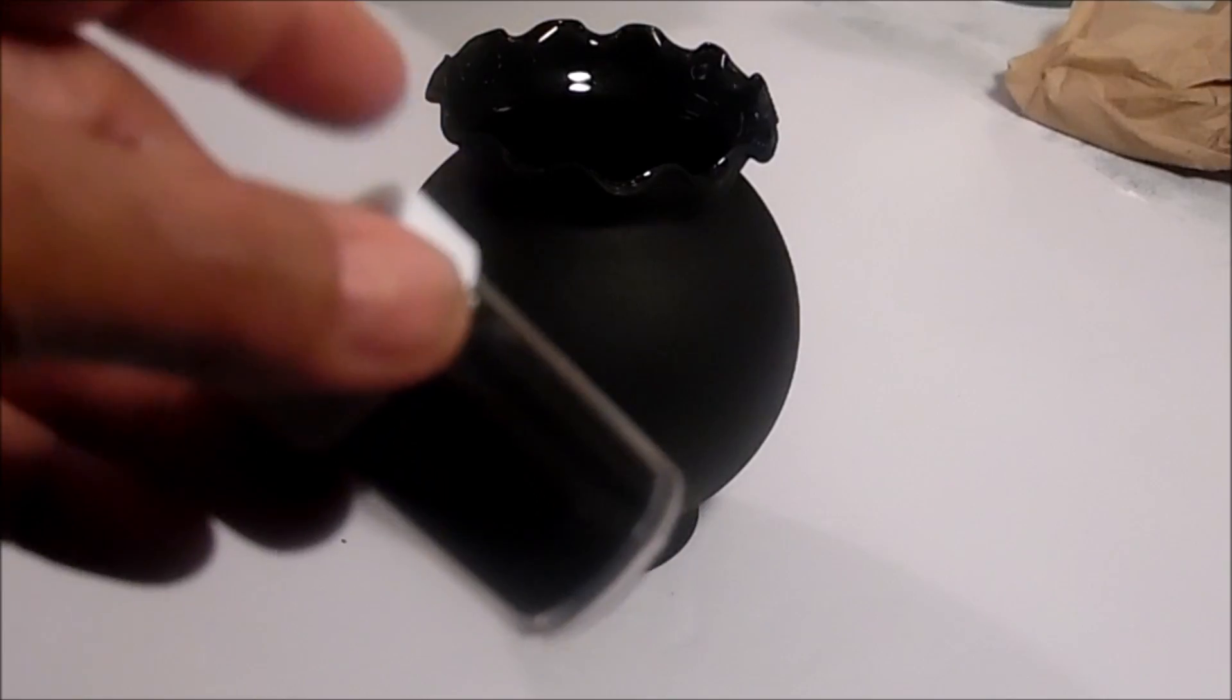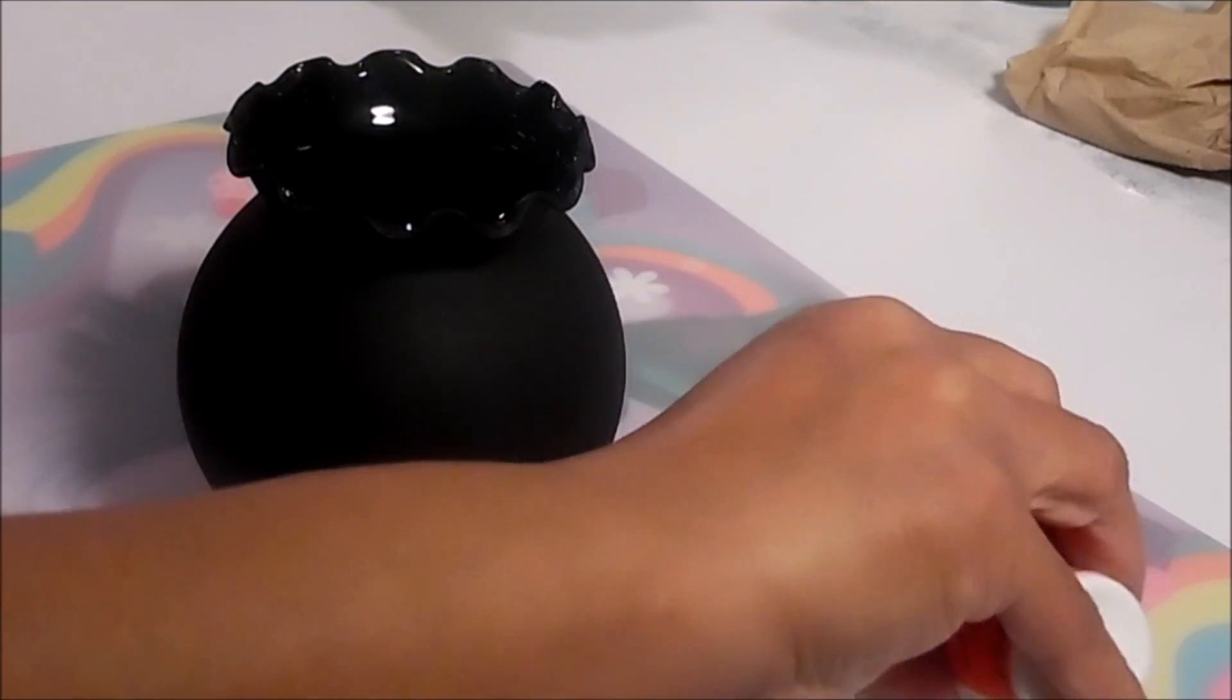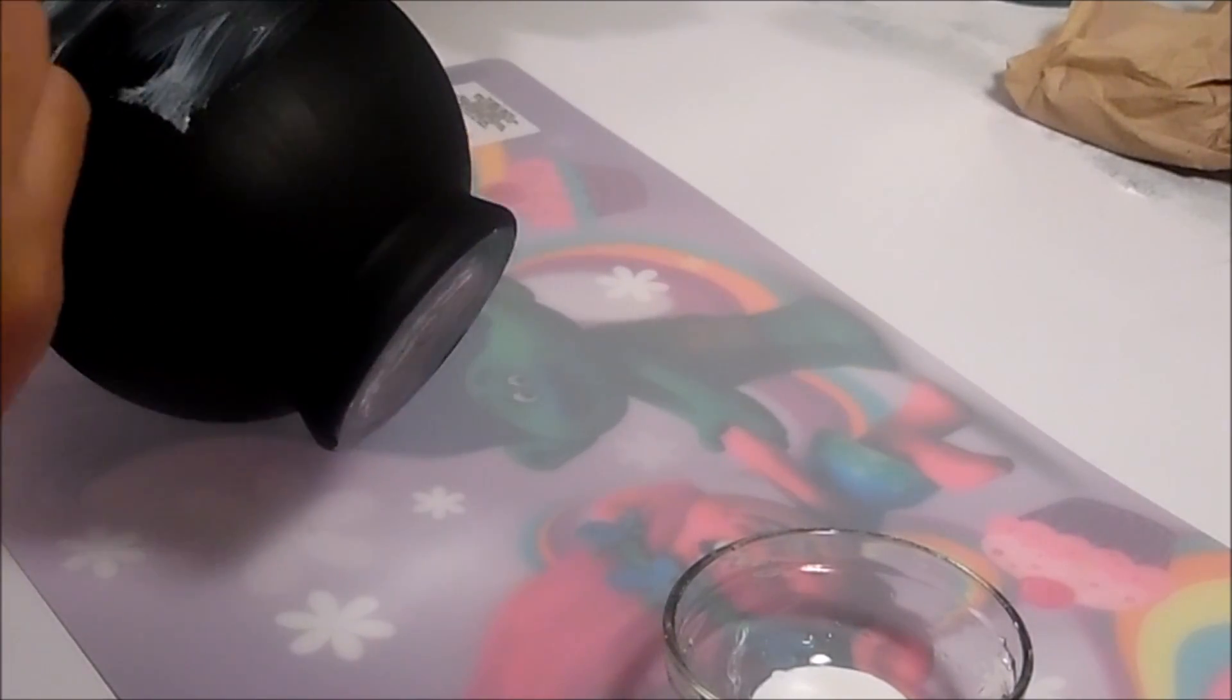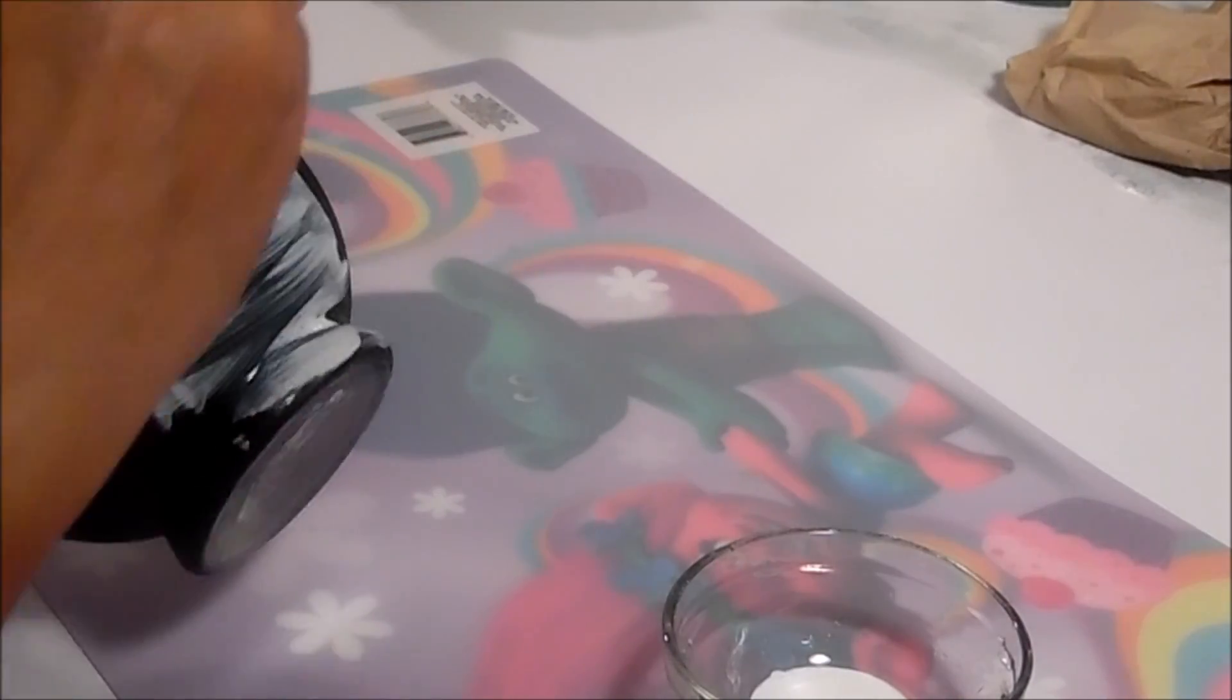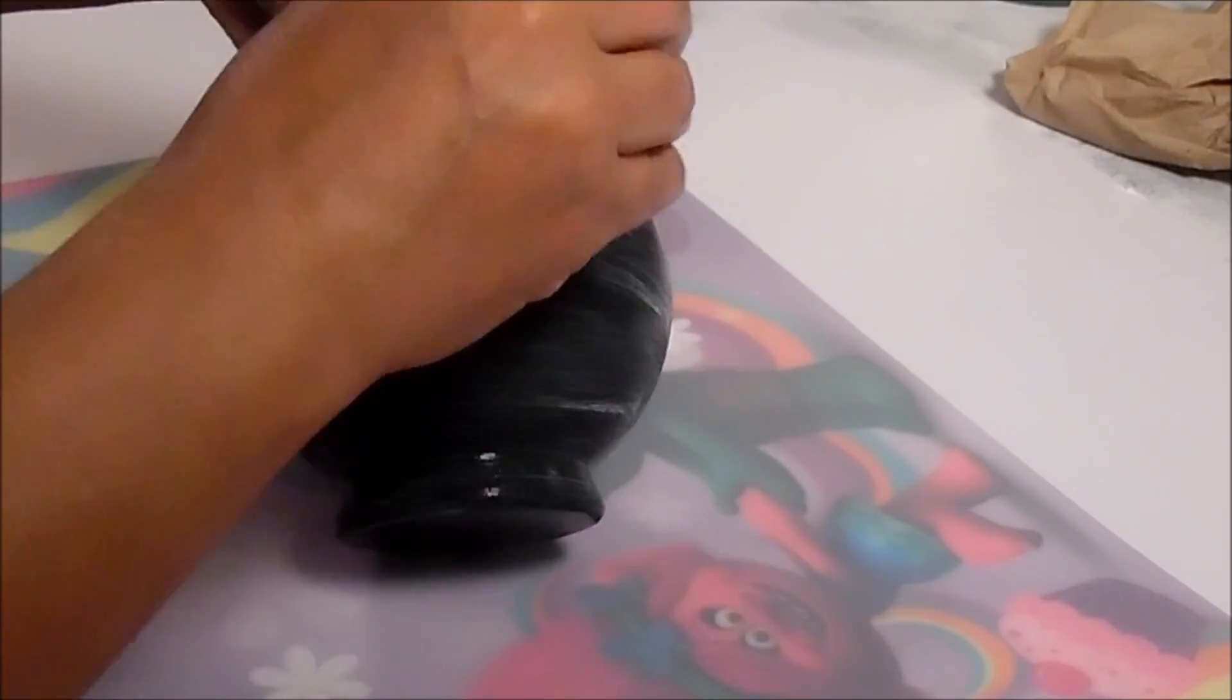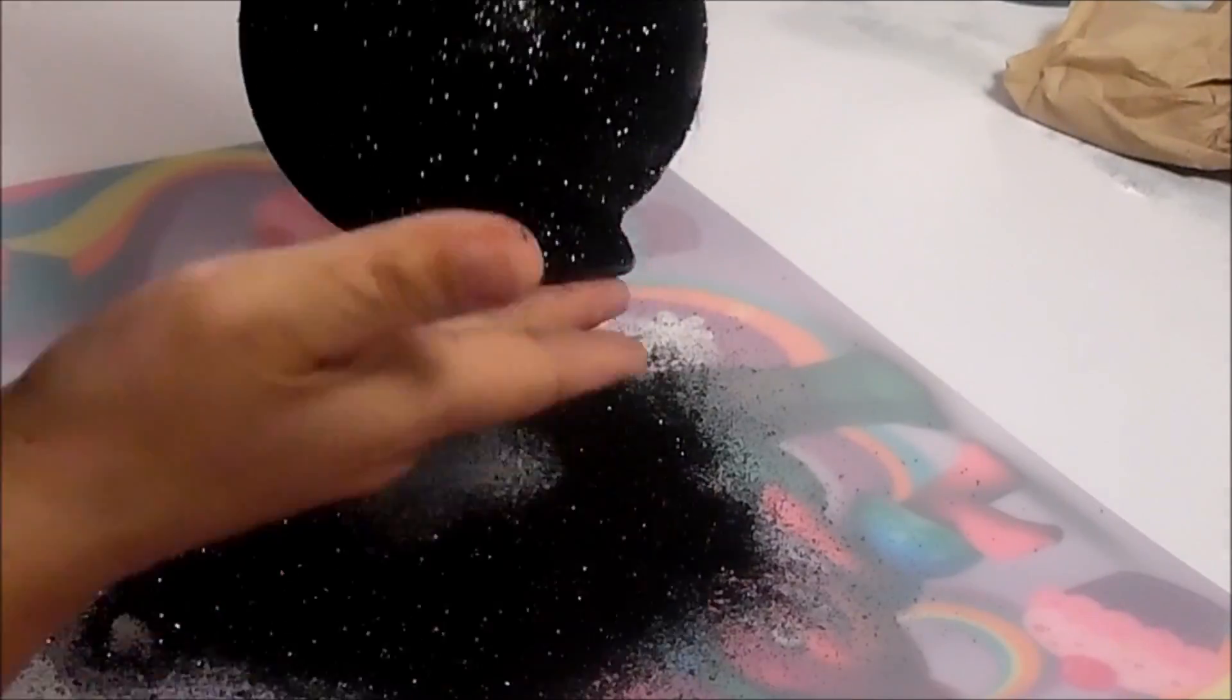So I'm going to take some Mod Podge, and you can pick this up at the Dollar Tree also. They have these little small containers and this one is gloss. So I'm just going to pour a little bit of my Mod Podge in this bowl. I'm going to apply my Mod Podge as smooth as I can. I'm going to do one side and then I'll apply the glitter, and then I'll go on to the next side.